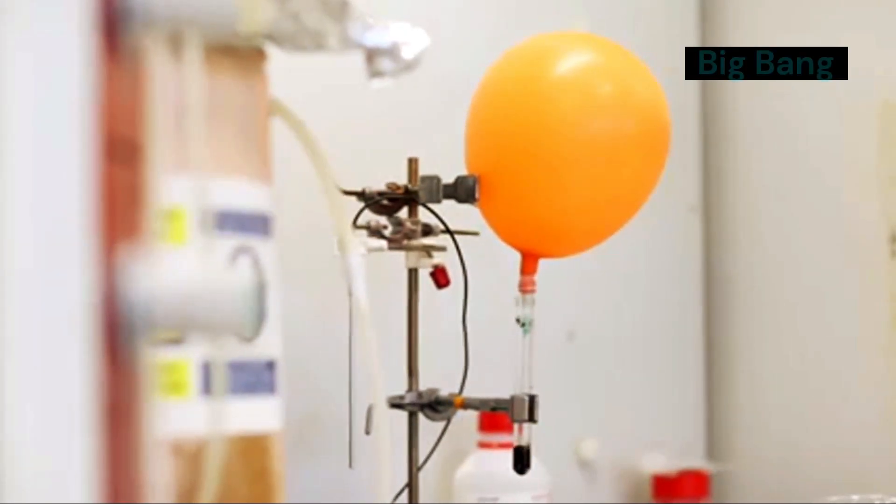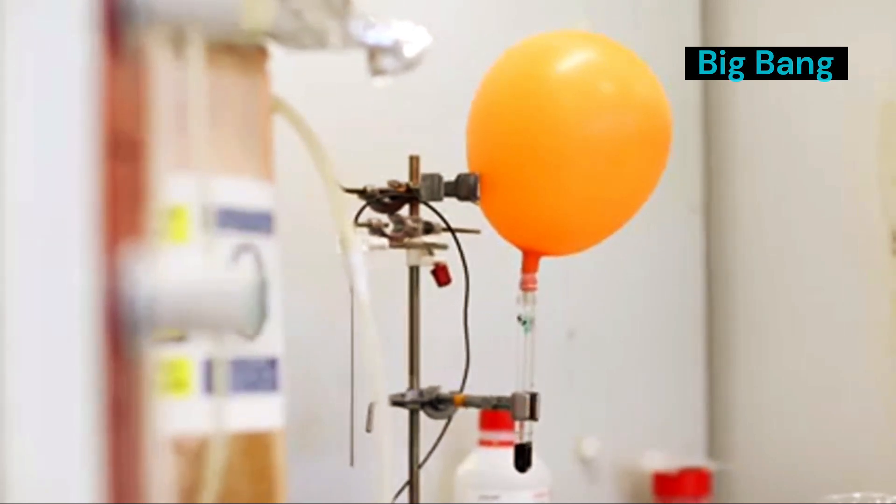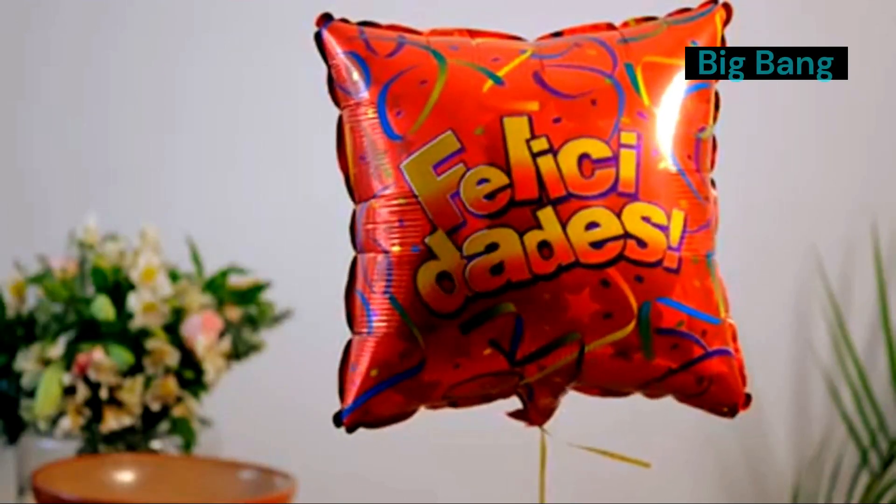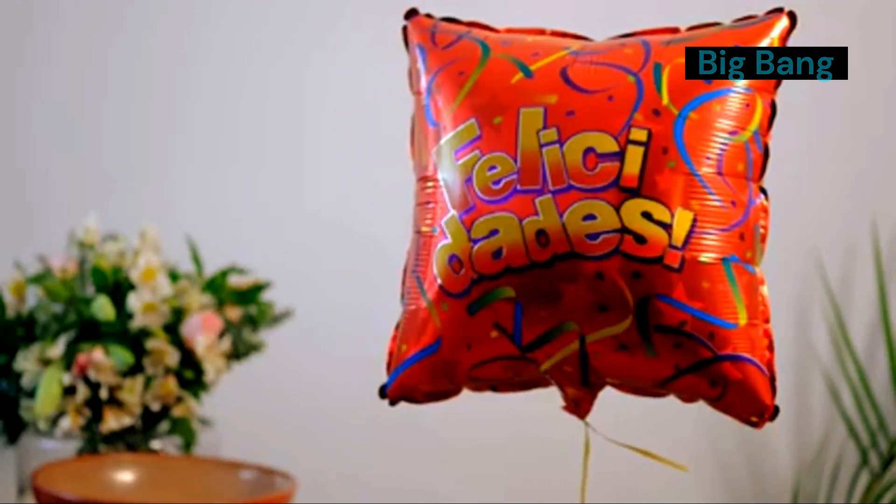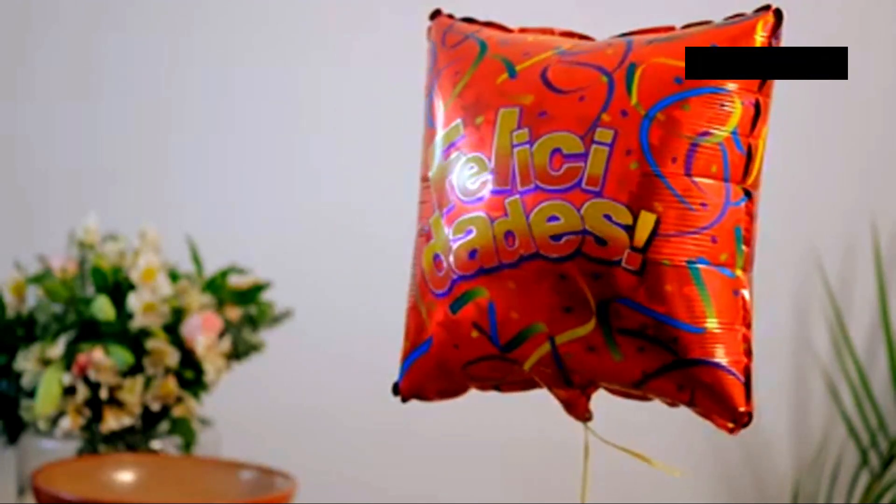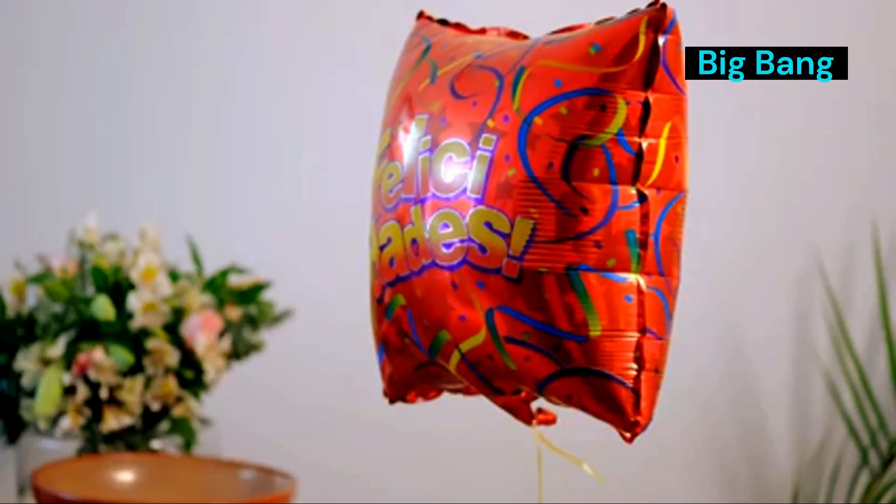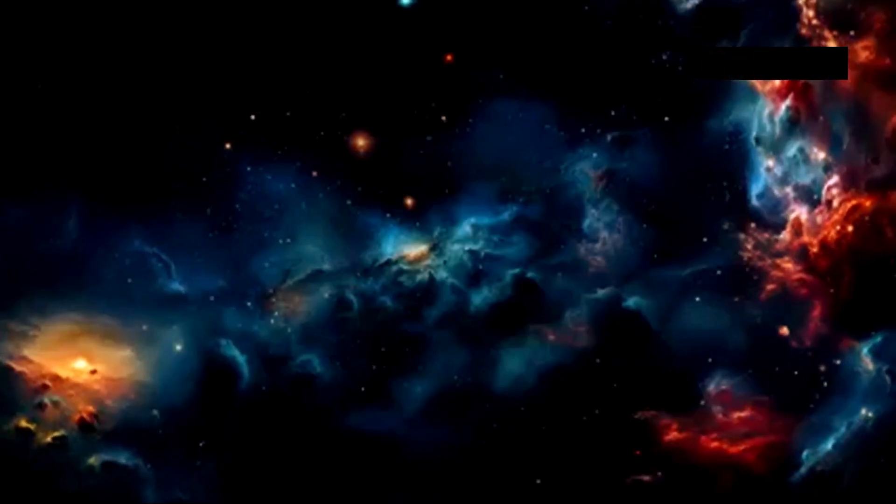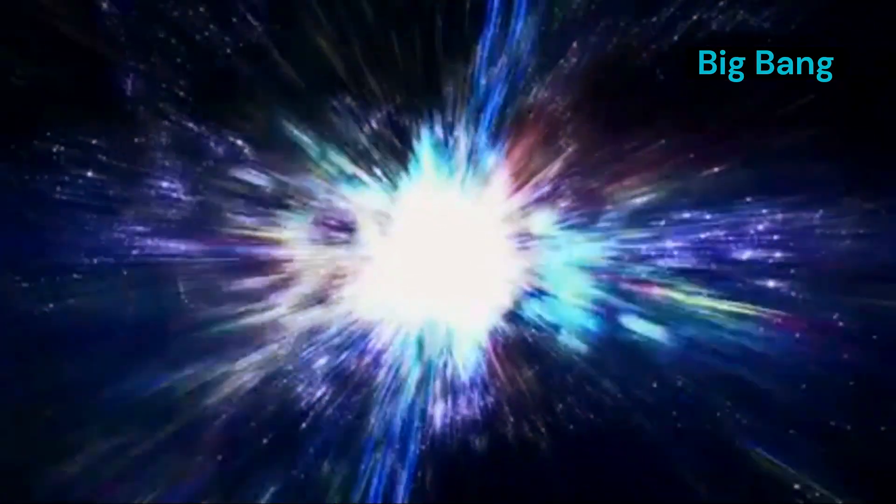Imagine you have a balloon with tiny dots drawn all over it. Each dot represents a galaxy. As you inflate the balloon, the dots move farther apart. Not because they're moving across the surface, but because the surface itself, the fabric of space, is expanding. Inflation suggests that the very early universe underwent a similar, albeit much faster and more dramatic expansion, smoothing out any initial differences. I'm starting to see how that solves the uniformity problem. But does this mean inflation is a done deal? Case closed. Does this explain everything?